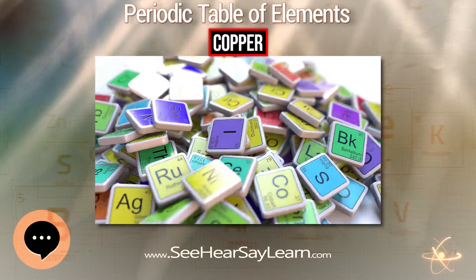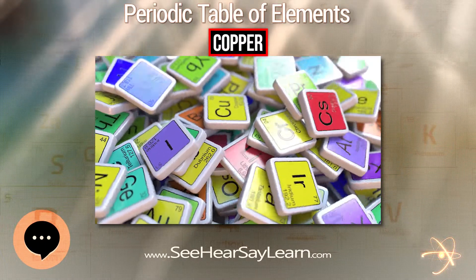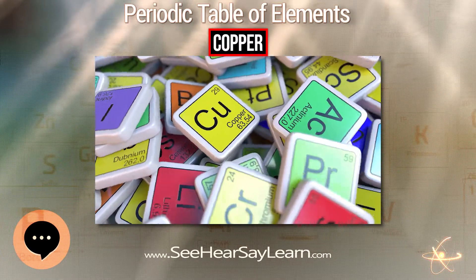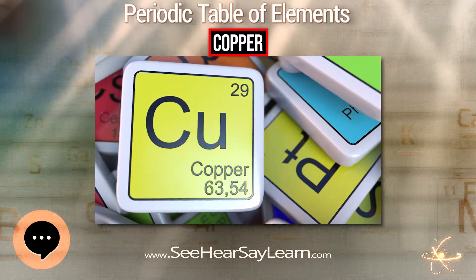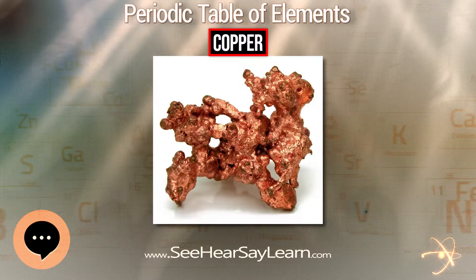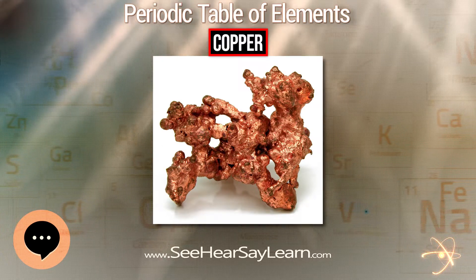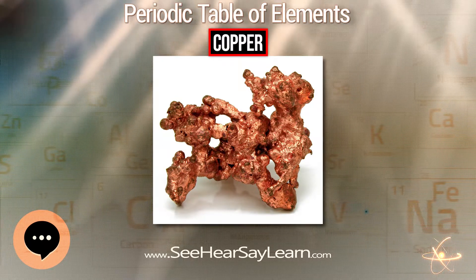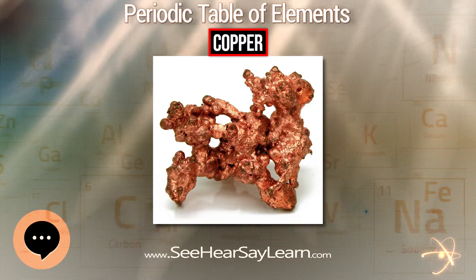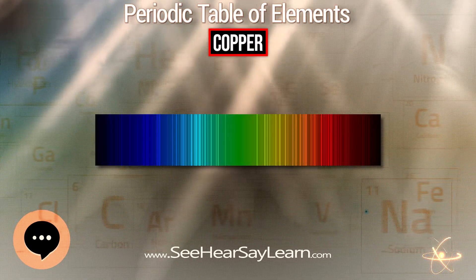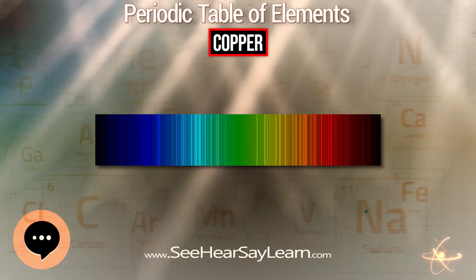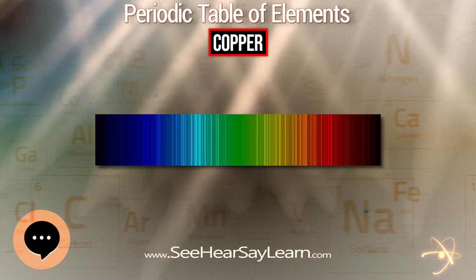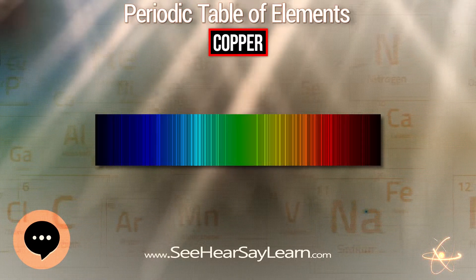Copper, silver, and gold are in Group 11 of the periodic table. These three metals have one s orbital electron on top of a filled d electron shell and are characterized by high ductility and electrical and thermal conductivity. The filled d shells in these elements contribute little to interatomic interactions, which are dominated by the s electrons through metallic bonds.